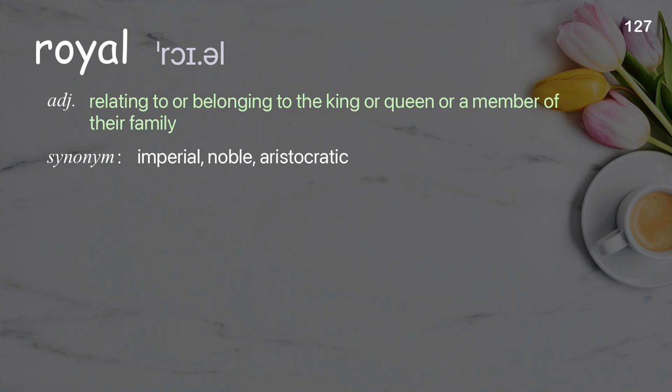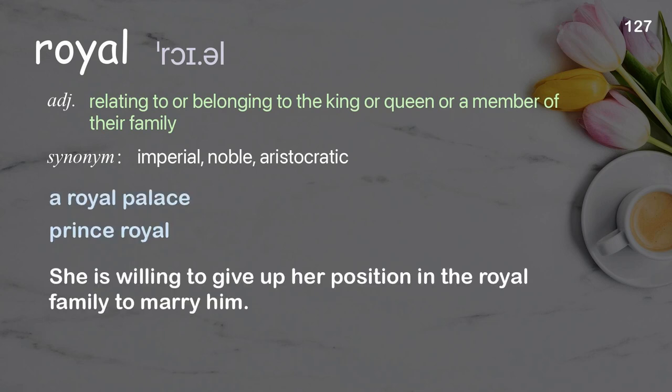Royal: relating to or belonging to the king or queen or a member of their family. Examples: a royal palace, prince royal. She is willing to give up her position in the royal family to marry him.